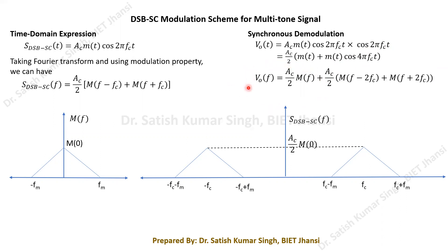After low-pass filtering, we recover the original message signal. This confirms that DSBSC has the same bandwidth of 2fm as conventional AM — it is not bandwidth efficient — but it is power efficient.